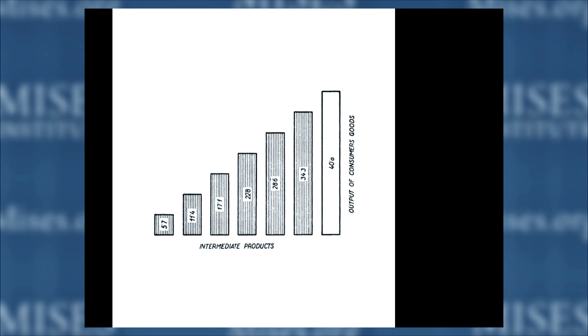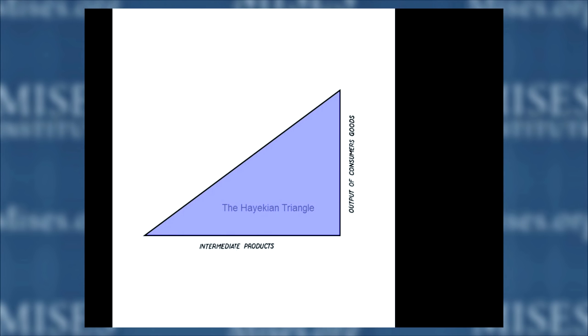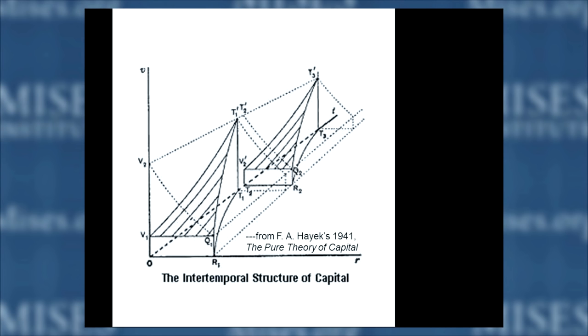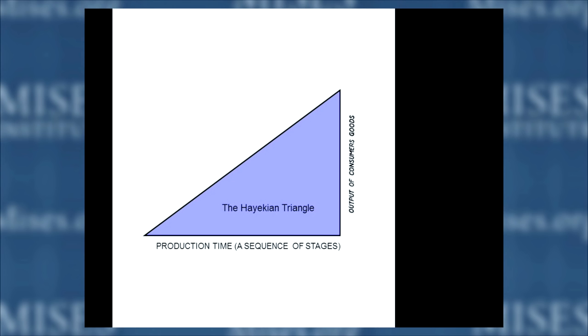Walter Block has claimed several times that I solved the problem of time coming down the vertical axis. I did work on it and came up with a solution: now time goes from left to right and value goes the other way — making a Hayekian triangle out of it. If you want something more complex, look at the diagram from Hayek's Pure Theory of Capital. I like that one. Thank you very much.